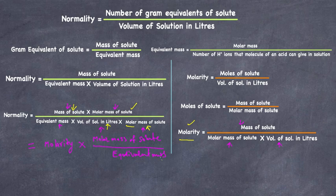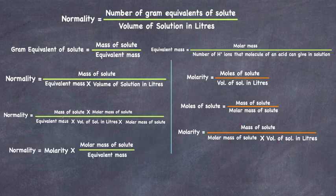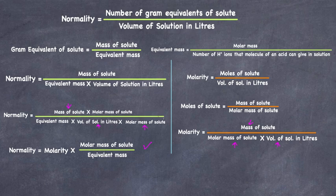So: Normality = Molarity × (molar mass of solute / equivalent mass). That is the mathematical relationship between normality and molarity. The mass of solute, molar mass of solute, and volume of solution together equal molarity, and the remaining factor is molar mass over equivalent mass.